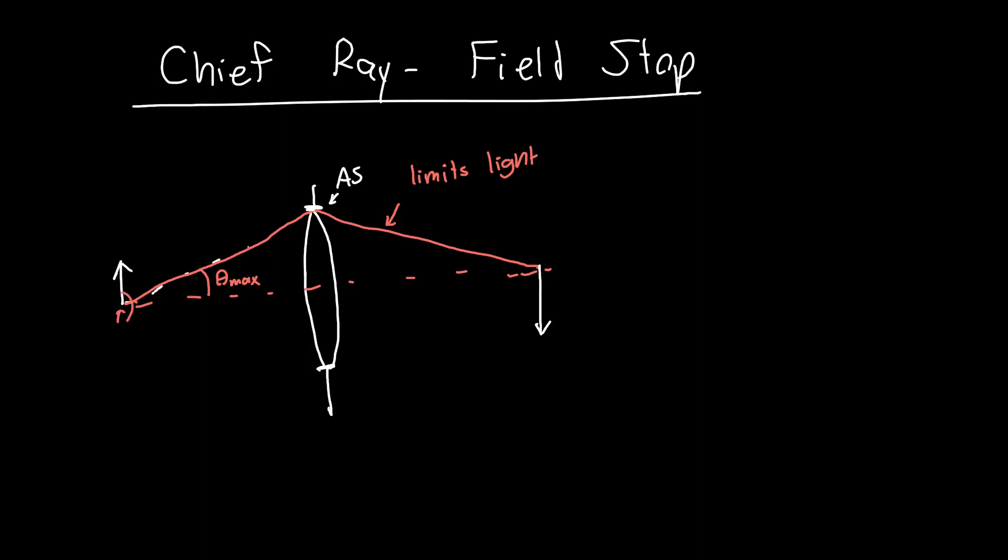And this ray is really important because it limits the light that we can collect from our system. So from a point source here, which is emanating spherical waves in all directions, only some of that radiation, so only the radiation within this cone is captured by our optical system. The rest is lost. And so that's really important. This angle will also turn out to limit our resolution and our numerical aperture. So it's also very important for that reason.